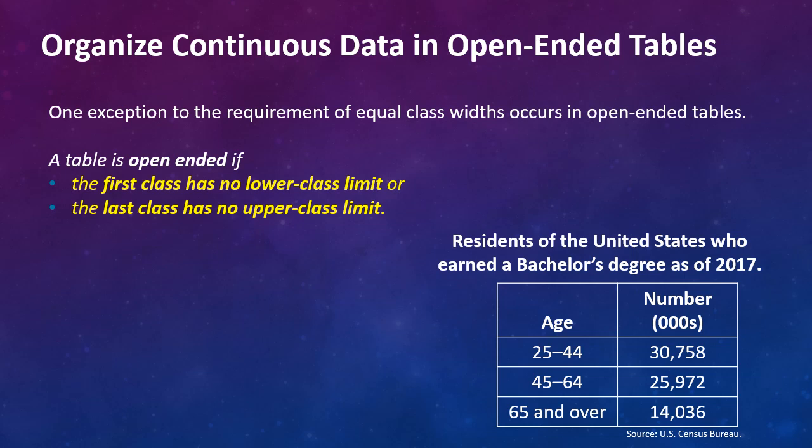One exception to the requirement of equal class widths occurs in open-ended tables. A table is open-ended if the first class has no lower class limit or the last class has no upper class limit. Here we have a table of the residents of the United States who earned a bachelor's degree as of 2017. We go from 25 to 44. The first class has a lower class limit, which is 25. But notice the last class has no upper limit. It's just 65 and over. And so this is why this table is an open-ended table.